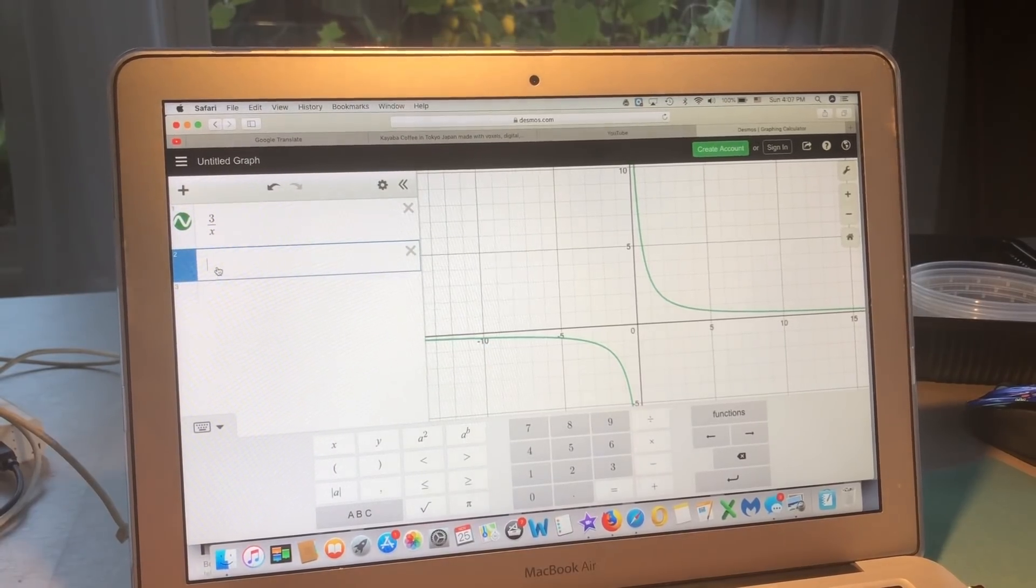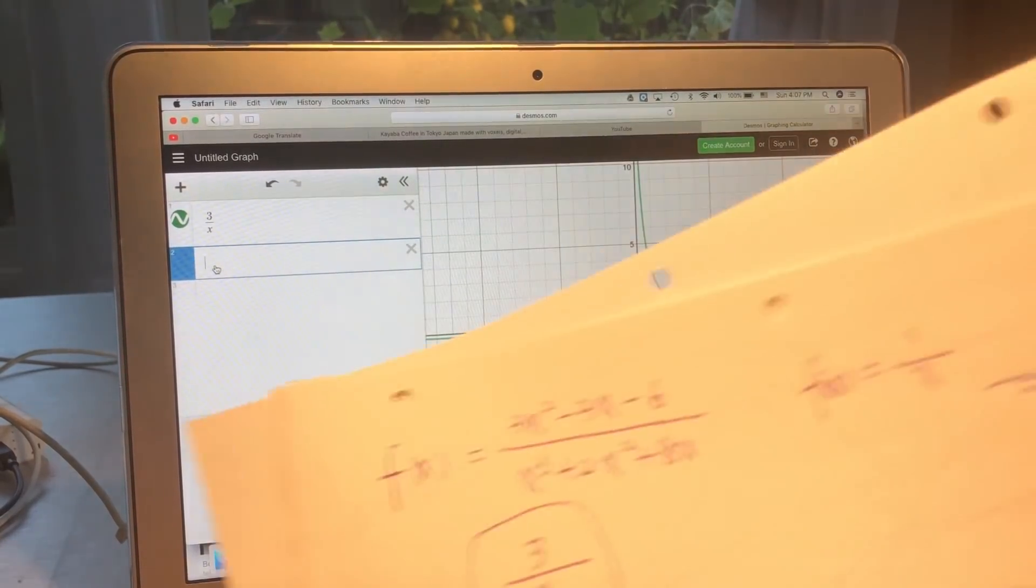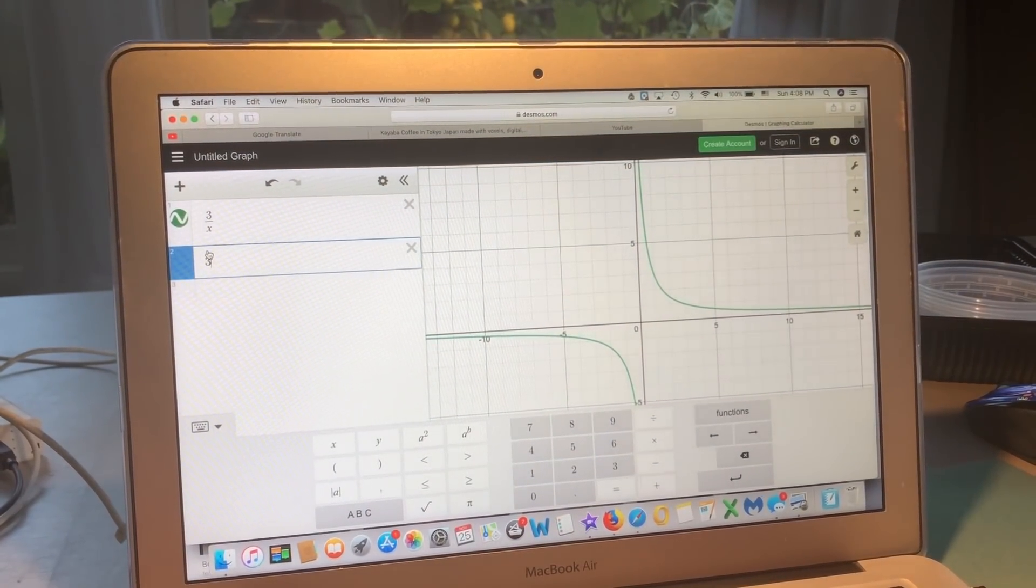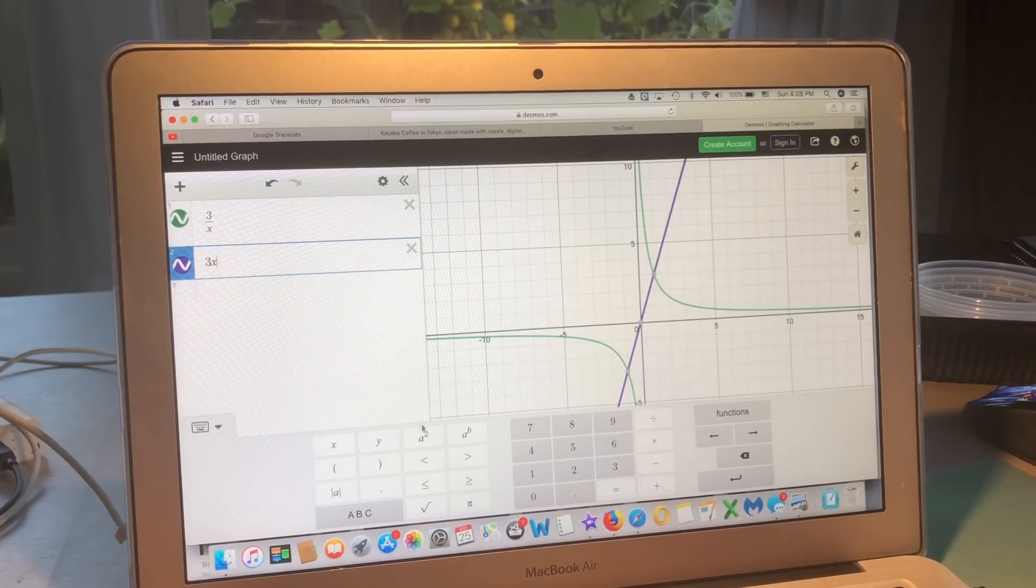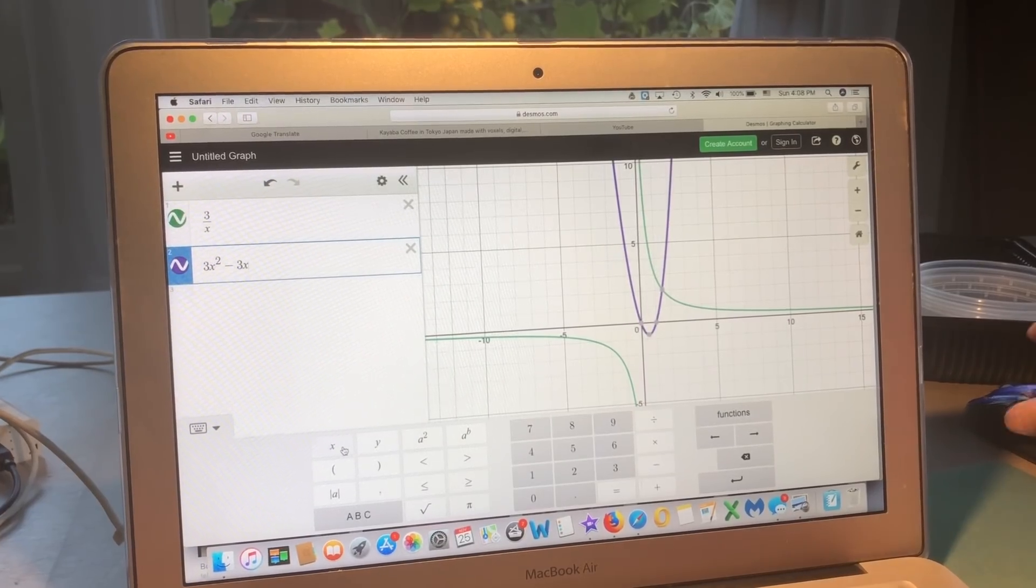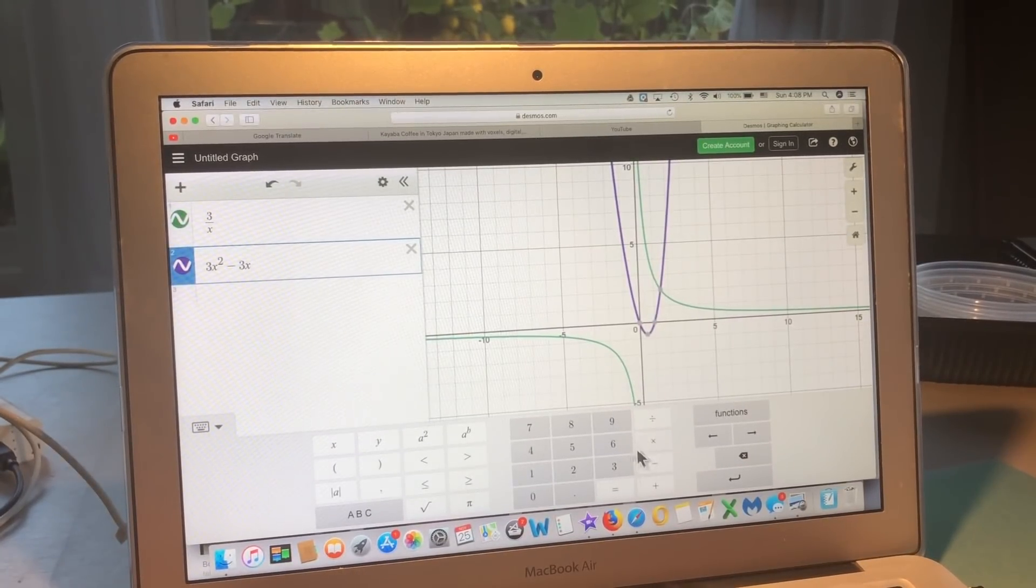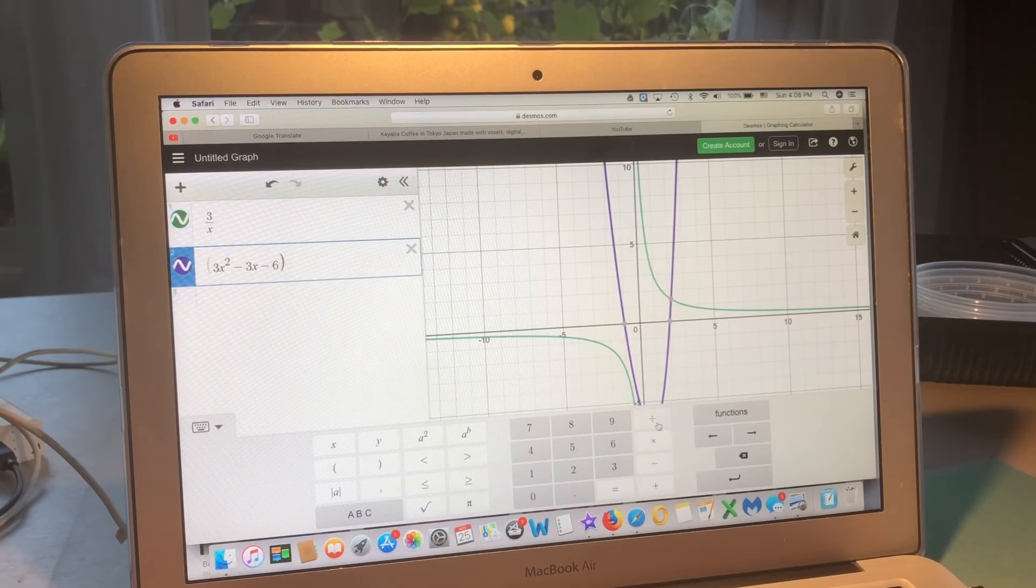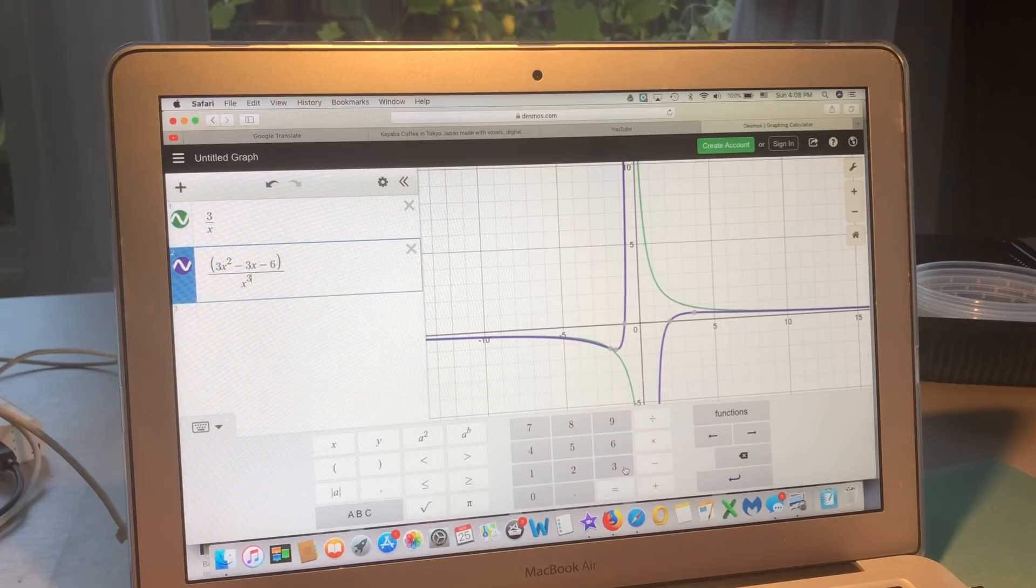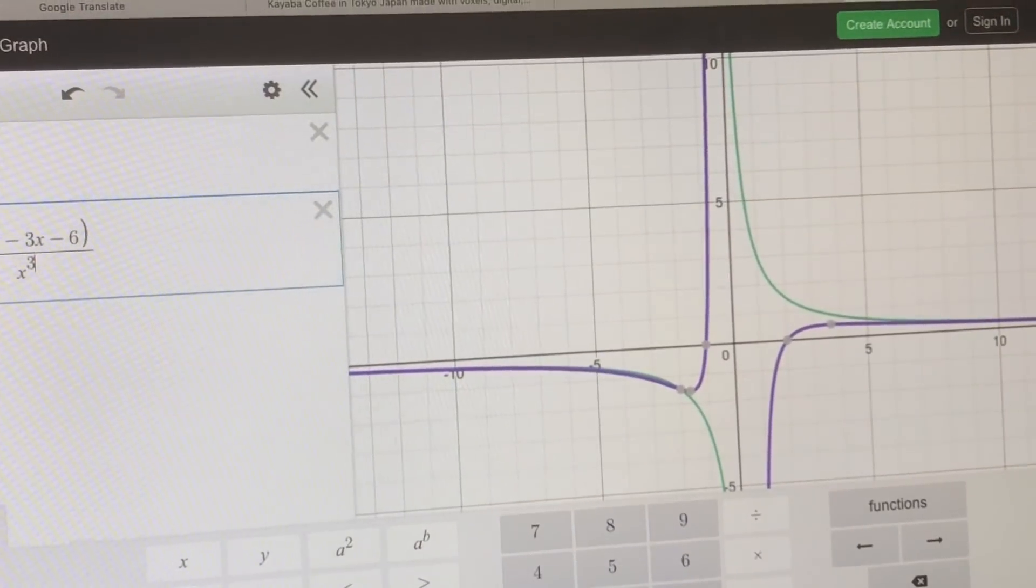If we have another one, now we put on the real function here. 3x squared minus 3x minus 6 divided by x cubed plus 2x squared plus 8x. Okay, you need to see it.